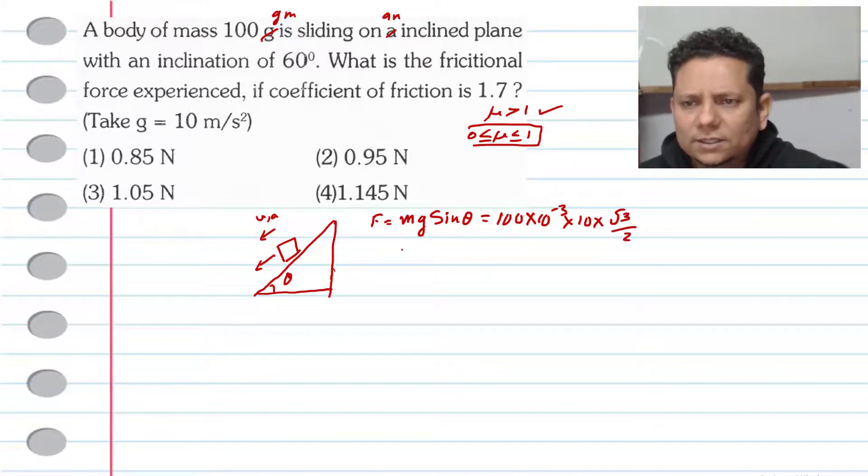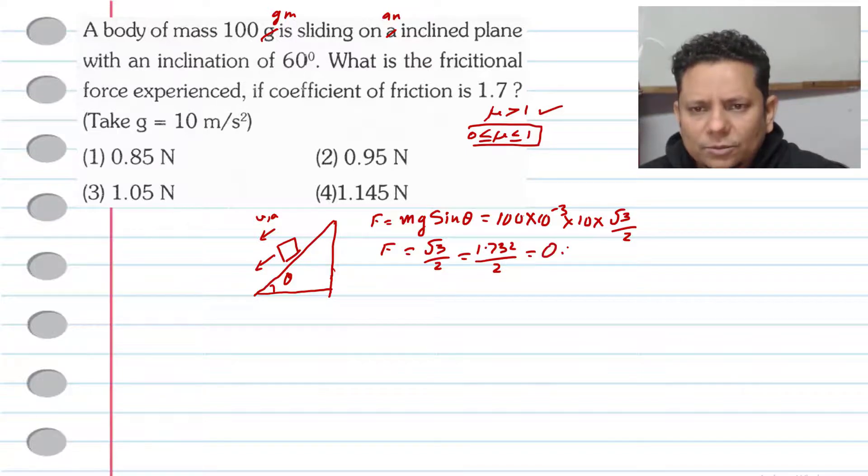So the driving force value will be 1.732 divided by 2, which is 0.866 newton. Your driving force will be 0.866 newton.